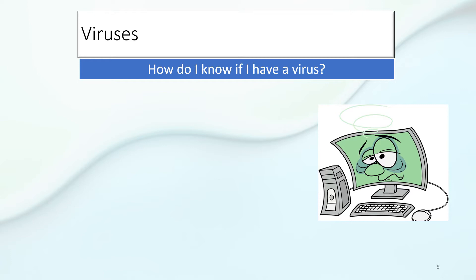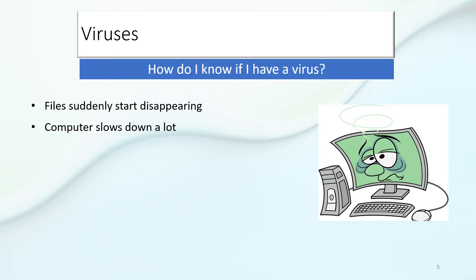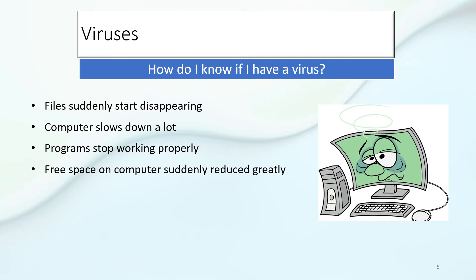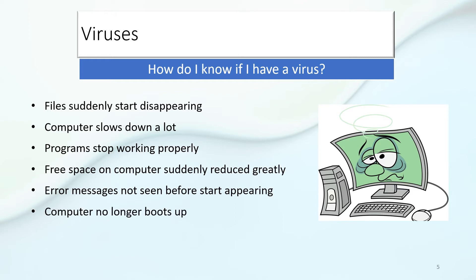How do you know if you have a virus on your computer? Files suddenly start disappearing. Your computer slows down a lot. Programs stop working properly. Free space on your computer suddenly gets reduced hugely. Error messages not seen before start appearing. Your computer no longer boots up. Antivirus software reports the presence or the threat of a virus.